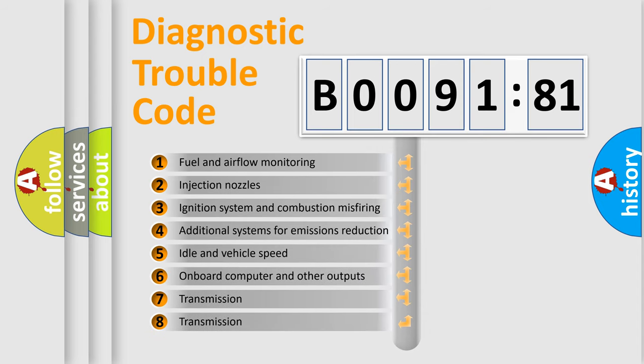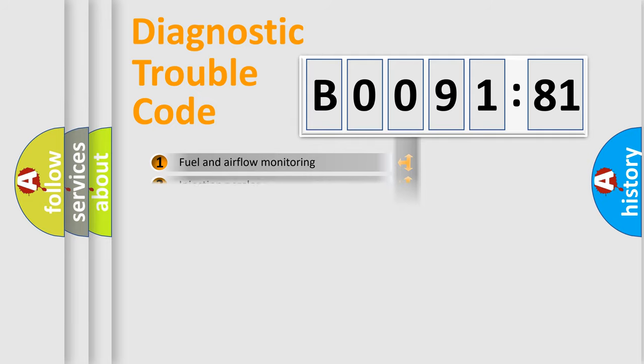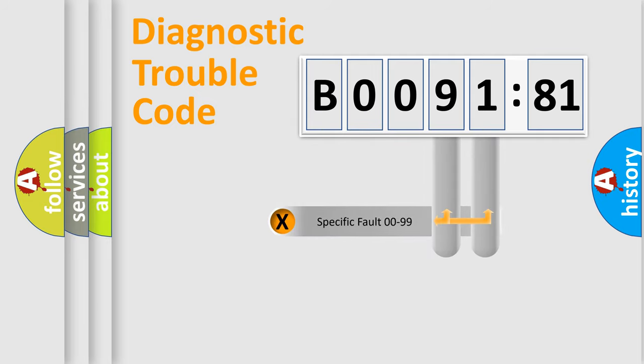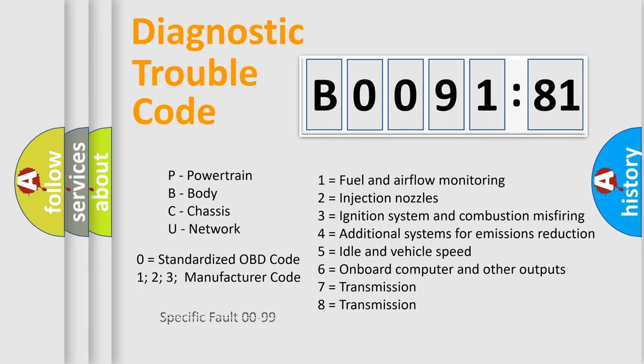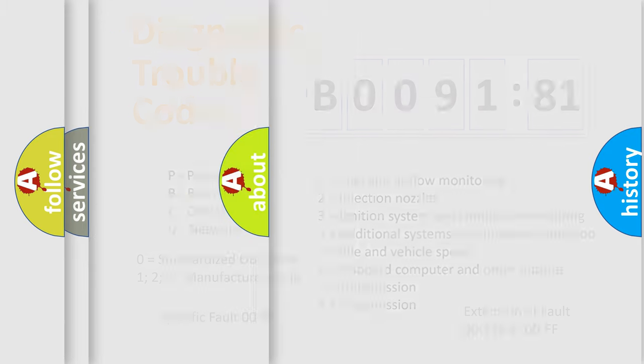The third character specifies a subset of errors. The distribution shown is valid only for the standardized DTC code. Only the last two characters define the specific fault of the group. The add-on to the error code serves to specify the status in more detail, for example, a short to the ground. Let's not forget that such a division is valid only if the second character code is expressed by the number zero.